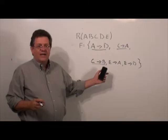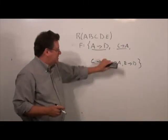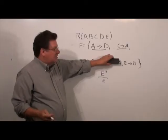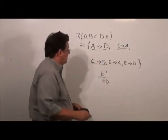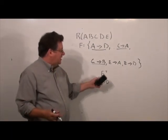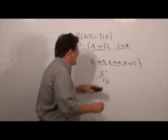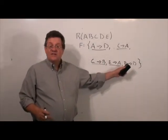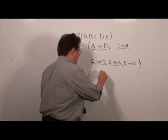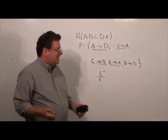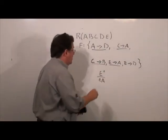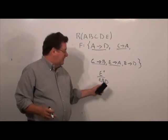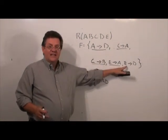Now we check E → A. We pretend it doesn't exist and compute E closure: E by reflexivity, then E → D, giving {E, D}. We did not get A, so E → A must stay. Finally, we check E → D. Pretending it doesn't exist: E closure starts with E, then E → A gives A, and A → D gives D. So we can reach D without E → D — we eliminate that functional dependency.